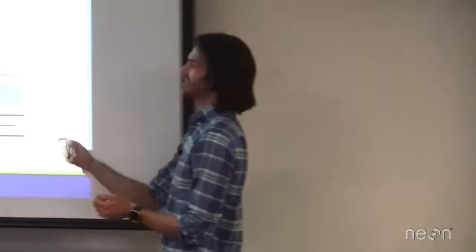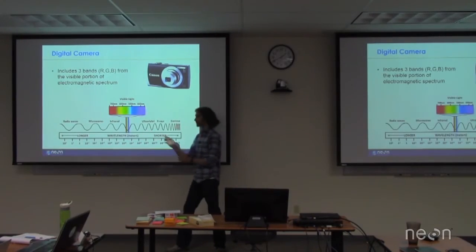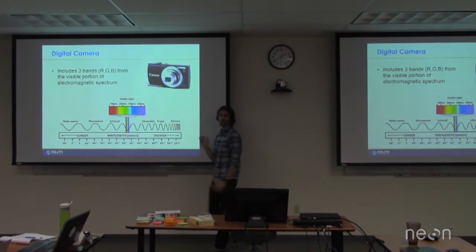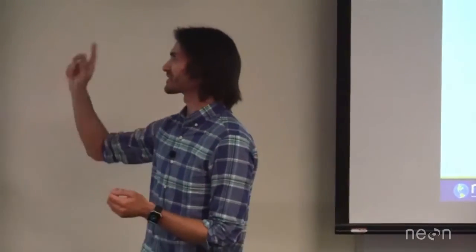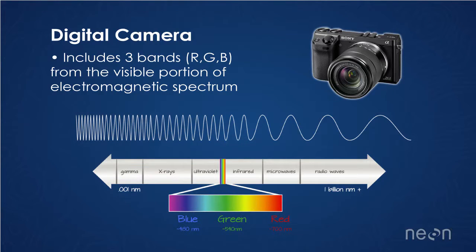Does anyone know why we grab the information from this portion as opposed to any other section of the spectrum? Because we can see it. We want our pictures. It's not a trick question. We want the pictures that we take with the camera to look like what we see with our eyes. And so out of all that spectrum, we take the information from the visible portion.